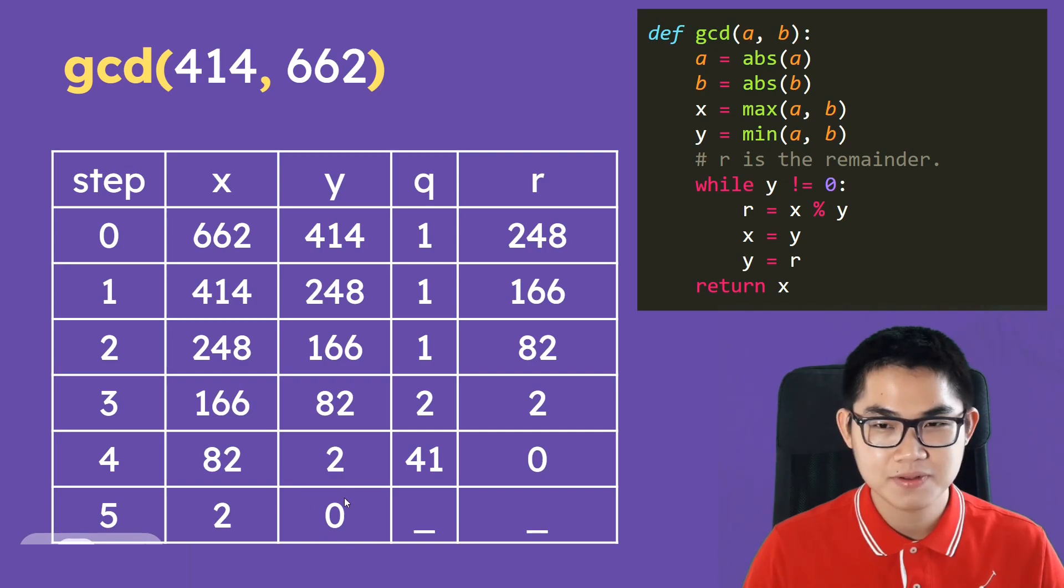We find the remainder, so to do that you can use the modulus sign, and that's basically the percent sign. Basically this is the arrow part, so you take y, you put into x, so this is x equals y. And then take r, put it into y, and that is y equal r. And at the end when y is equal to zero, you will return whatever value you have here. So return x.